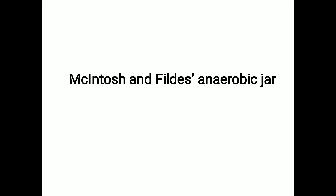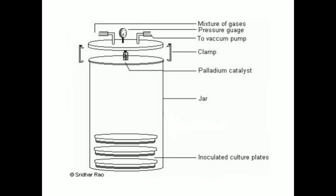Now let's look at the equipment. The Macintosh and Fildes jar consists of an 8×5 inch jar of stout glass or metal with a tight-fitting metal lid. The lid can be clamped airtight with a screw and is fitted with two tubes with taps — one for introduction of gas inside, that is the inlet, and the other as an outlet for the vacuum valve.